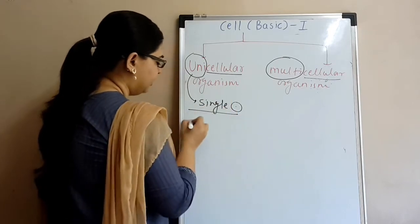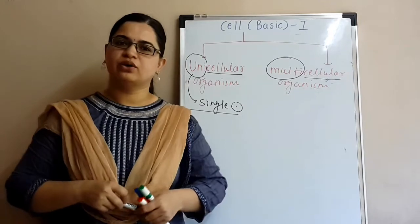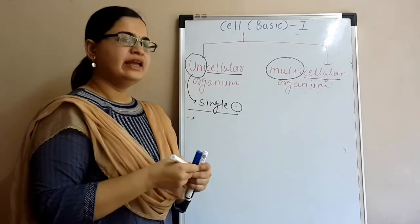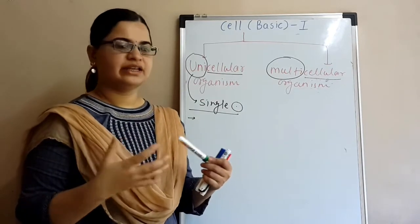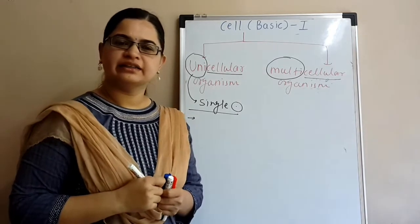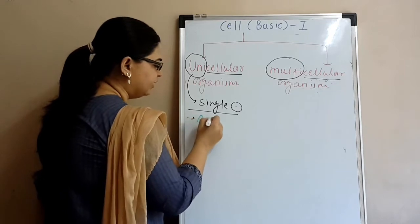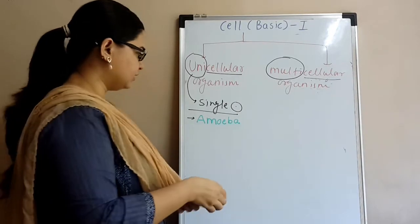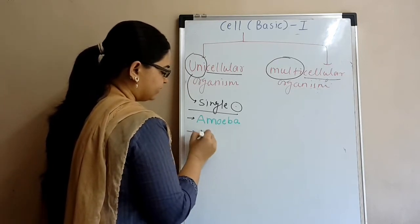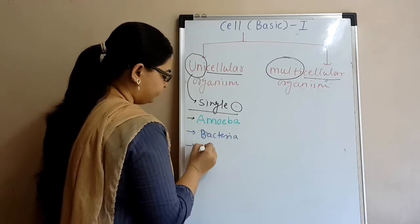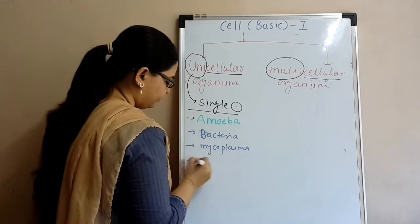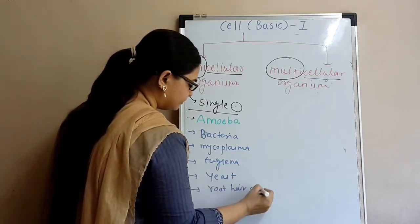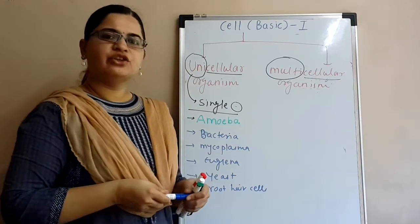Which example? First of all, it will be clicked in your mind - amoeba. Because amoeba we have studied throughout 5th standard. It was very good for exams because it doesn't have a proper shape. So this single cell's first example is amoeba. Let's tell another example. The second example could be bacteria, then mycoplasma, then euglena, then yeast, root hair cells. So these are some examples of unicellular organisms.